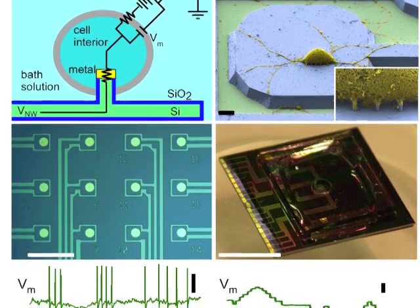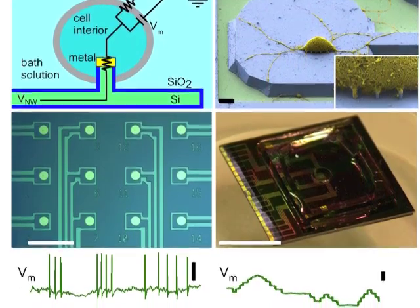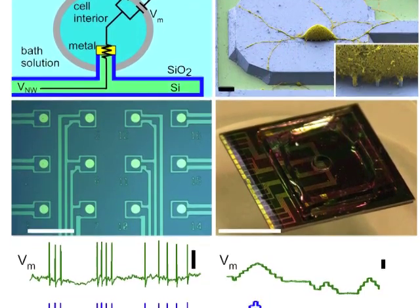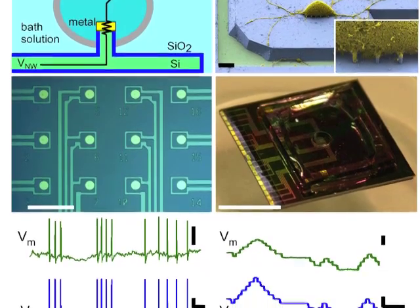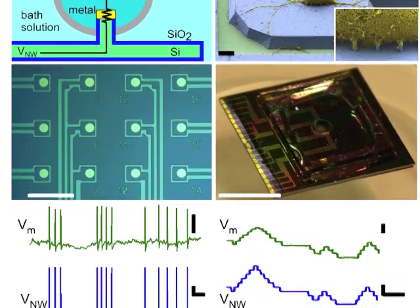At the top right, you see a rat hippocampal neuron attached to nanowires on the electrode array, which is shown in the middle figures. The figures on the bottom show preliminary electrode recordings of the neuron undergoing spiking.